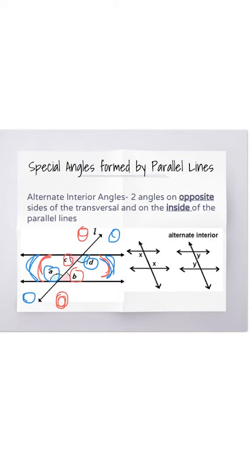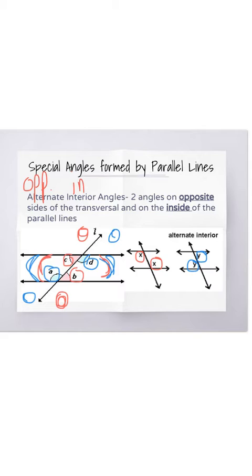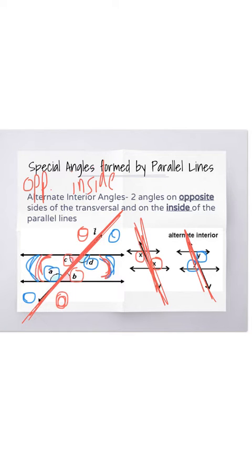If you look at the picture on the right, here's another example. You have X angles which are alternate interior — they're on the opposite side of that transversal line, but inside the parallel lines. Or you have the Y angles on the right. They are alternate interior angles because they're on the opposite side of that transversal line, but inside the parallel lines. Remember that alternate means opposite, and interior means inside.